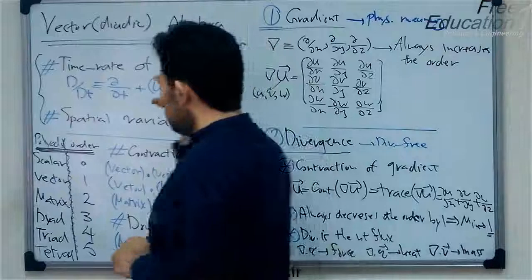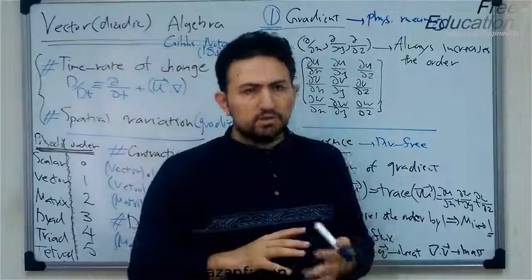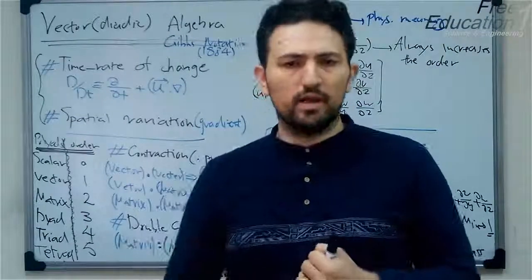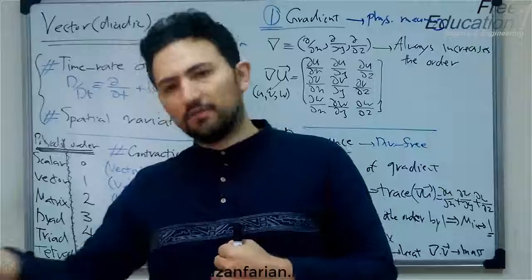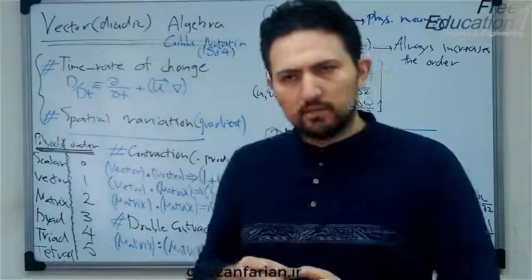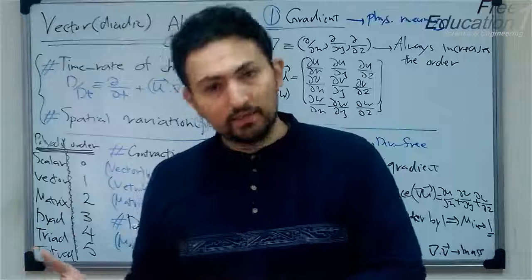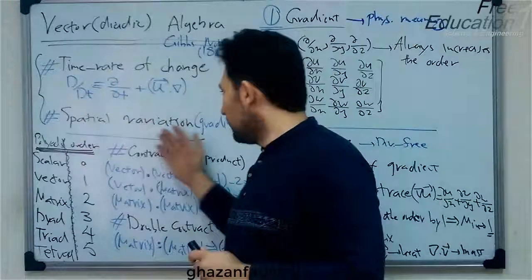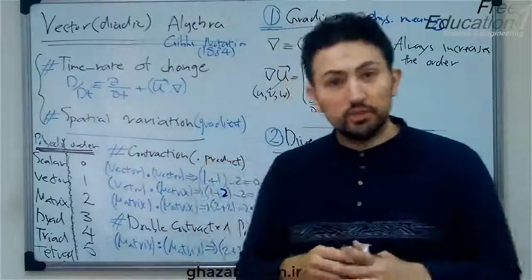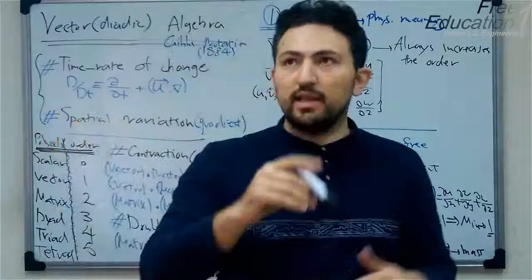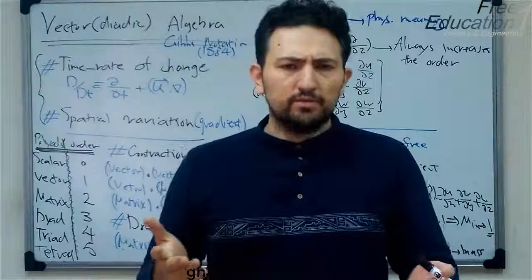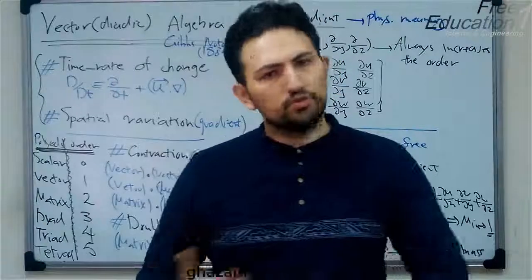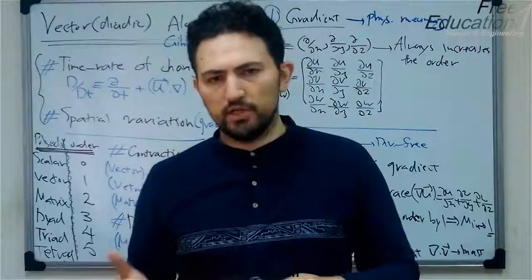In different physical problems, we are dealing with two types of variations. The first one is the time rate of change of something, which represents the temporal variation of that quantity. The second one speaks about the spatial variation of a quantity with respect to different coordinates in space. For example, in conservation laws, we have a time rate of change of temperature, momentum, linear momentum, energy, and so on.